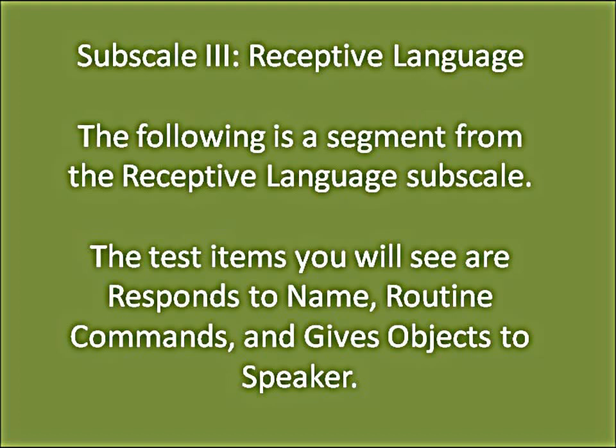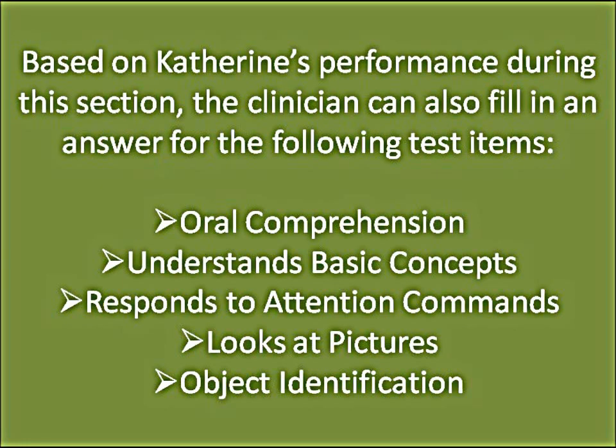The following is a segment from the receptive language subscale. The test items demonstrated are response to name, routine commands, and gives objects to speaker. The clinician calls Katherine's name and asks her to give the book, clap her hands, shake her head, and smile — all of which Katherine completes. Based on her performance, the clinician can also fill in answers for oral comprehension, understands basic concepts, responds to attention commands, looks at pictures, and object identification.